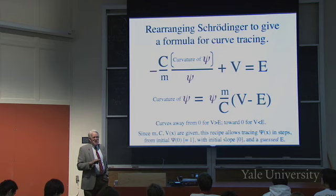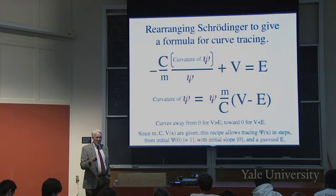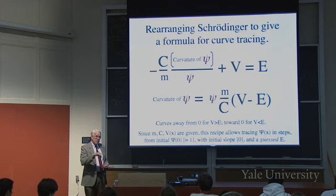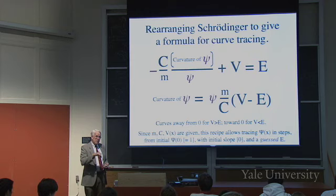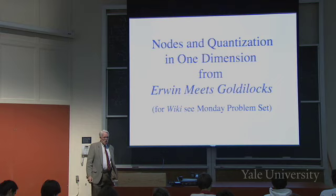People were worried about math — don't worry about math. Let the computer calculate how the slopes change. All you have to do is think about the curvature, think about the graph. We're going to talk now about nodes and quantization in one dimension, using the program 'Erwin meets Goldilocks.'